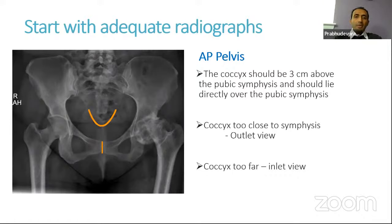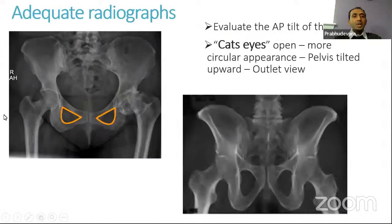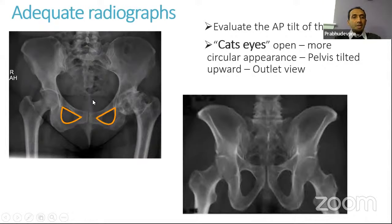If the coccyx is too close, that gives us an outlet view, and if it is too far away, it gives us an inlet type of view. This is how a good quality AP pelvis X-ray should look — the obturator foramen should be symmetrical, not too closed or too open, and the coccyx is centered with the pelvis not rotated. In an outlet view, you can see the coccyx is almost completely covered by the symphysis pubis, which is extreme — we should avoid X-rays like this, as the obturator foramen will appear really open and elongated.